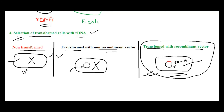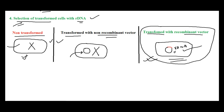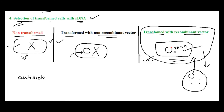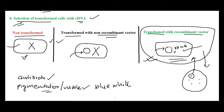How do we select the desired colony just by looking at a culture plate? We use certain antibiotics in the media — the rDNA would carry a gene for antibiotic resistance — or we use visible markers like blue-white screening. In blue-white screening, cells that are non-transformed appear blue, but cells transformed with rDNA produce white colonies. So when you look at the media, blue colonies are non-transformed and white colonies are the transformed ones containing your rDNA.